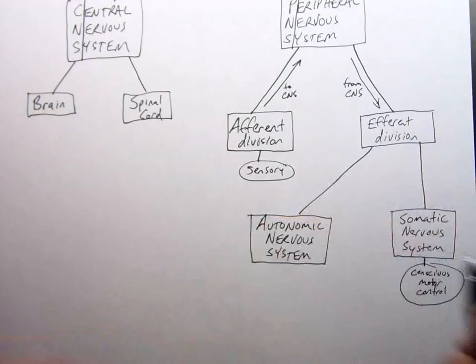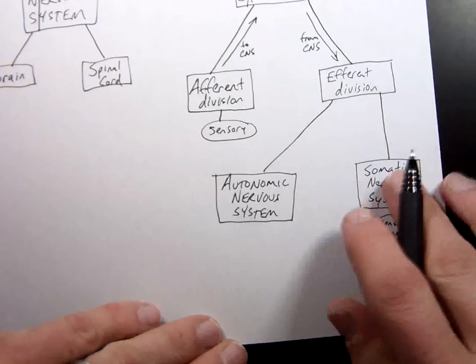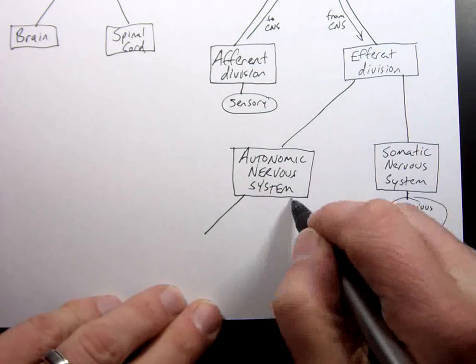If you can't control it and it happens by itself it is called the autonomic. Autonomic nervous system. Autonomic nervous system, auto being self.